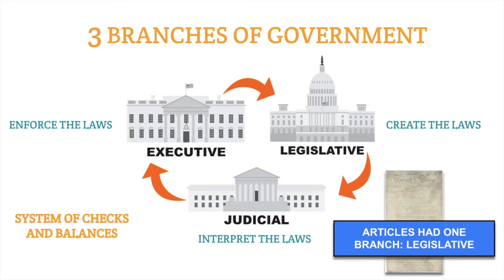Speaking of the branches, we have three branches of government. Under the Articles of Confederation, there was only one branch — the legislative branch. Under the Constitution, we're going to see the inclusion of two additional branches: the executive branch and the judicial branch. This gives us three functioning branches that all perform certain tasks and responsibilities. The executive branch will enforce the laws, the legislative will create and make the laws, and the judicial branch will interpret those laws.